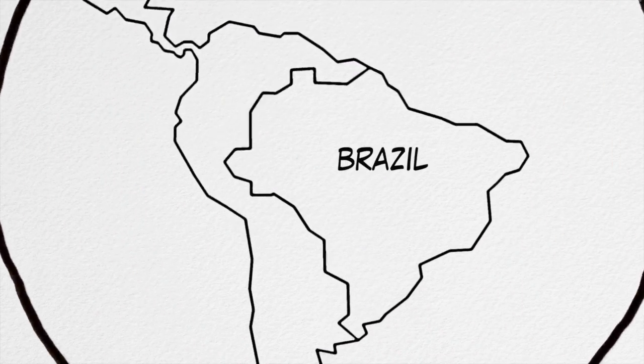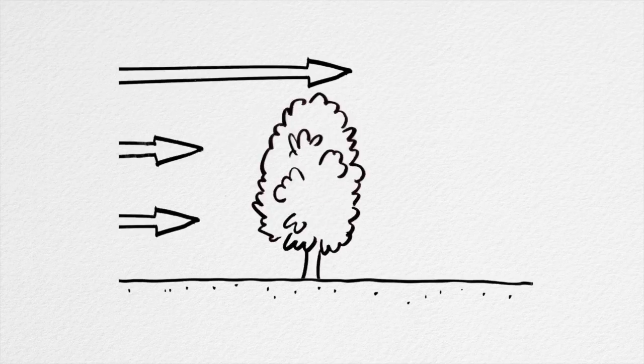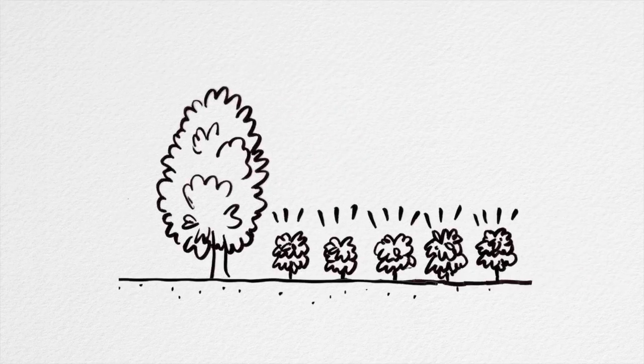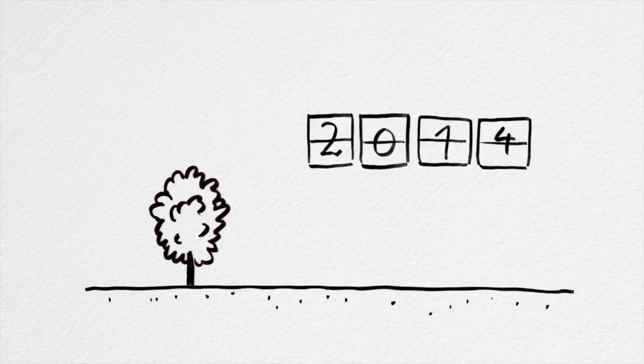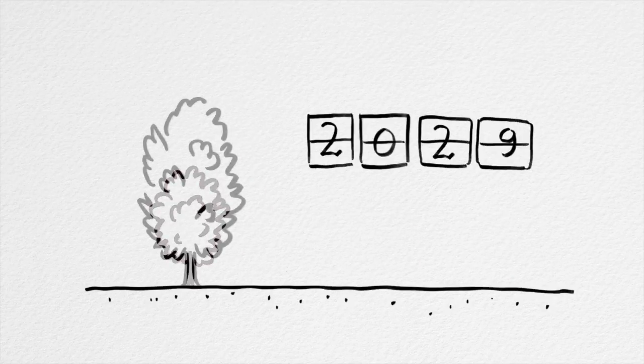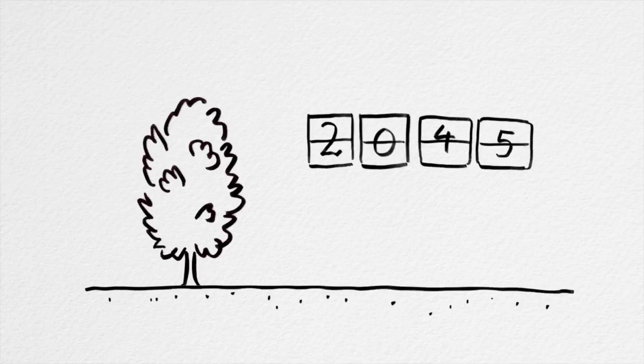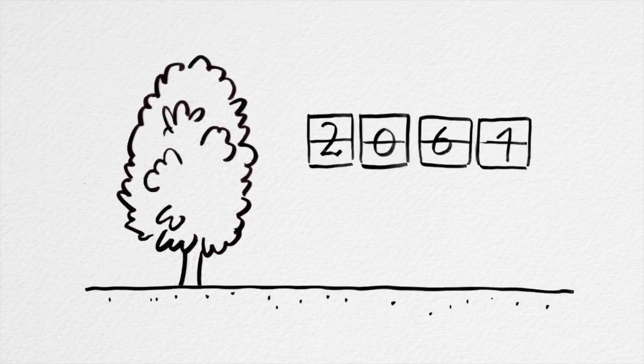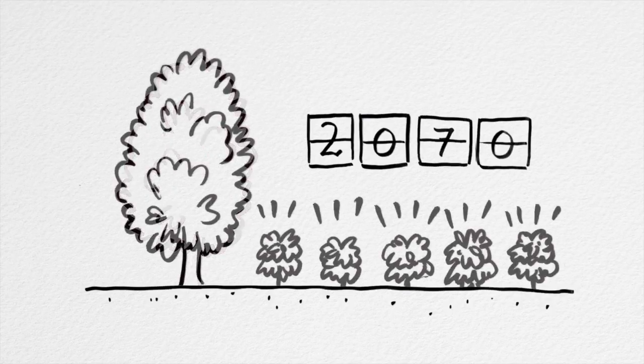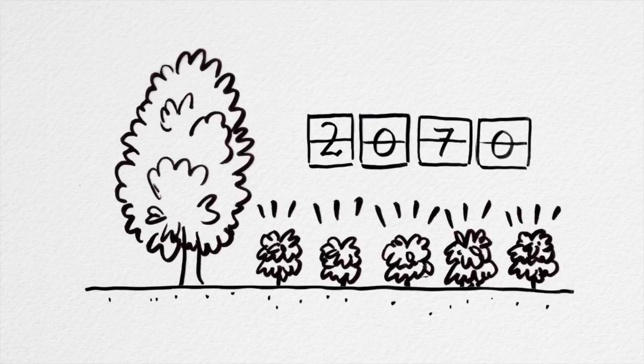Trees can also serve as windbreaks. In Brazil, they're used to protect young coffee plants from being destroyed by too much wind. As climate forecasts predict even stronger winds in the decades to come, the immediate seeding of new windbreaks becomes an effective measure to conserve young trees and prevent erosion.